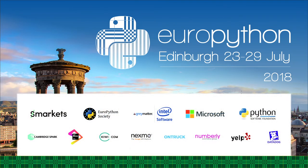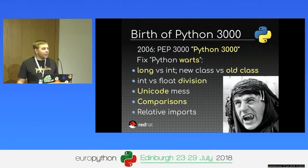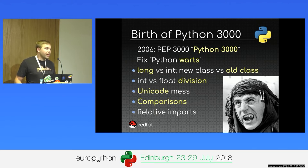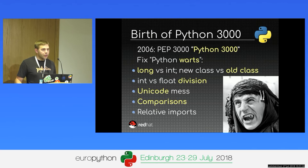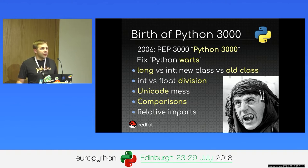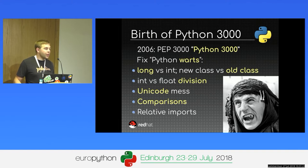At the very beginning of Python 3, there was a project called Python 3000. It was in 2006. It started with a PEP — PEP 3000 — called Python 3000. The idea was to focus on what are called Python warts, because Python 2 got more and more users and people started to complain about design issues, which were collected as a list called the Python warts.